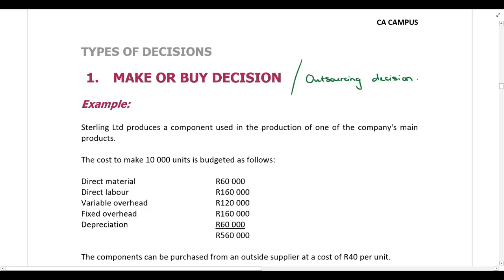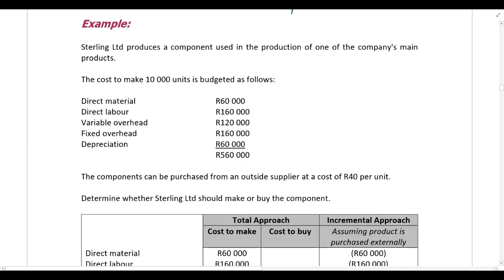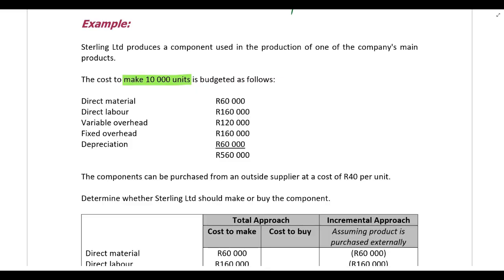Sterling Limited produces a component used in the production of one of the company's main products. The cost to make 10,000 units is budgeted as follows: direct material, direct labor, variable overheads, fixed overheads, and depreciation, giving a total manufacturing cost of 560,000 rand. Quickly go through the list and identify what is fixed and what is variable.